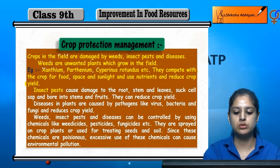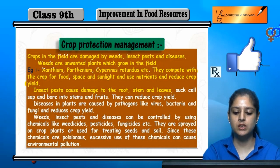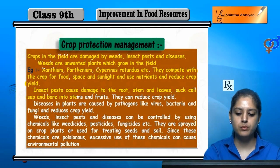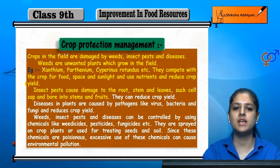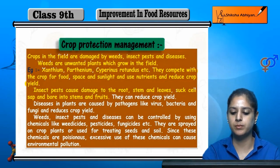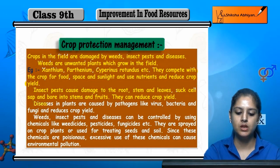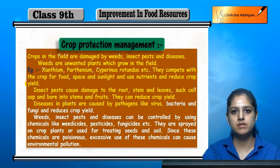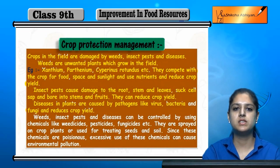Insects are pests that damage the root, stem and leaves. The pests suck cells and bore into the stem, breaking all the cells and reducing crop yield. Diseases in plants are caused by pathogens such as viruses, bacteria, fungi, and other disease-causing agents.